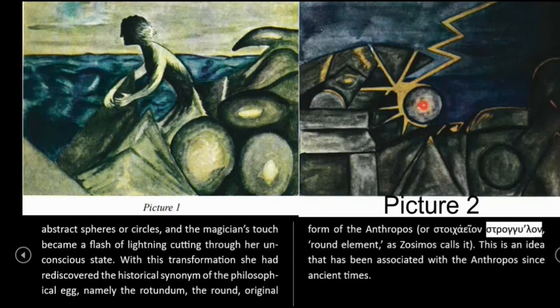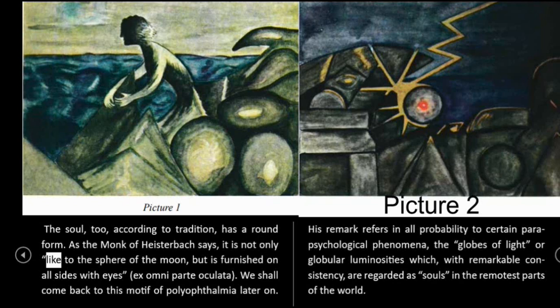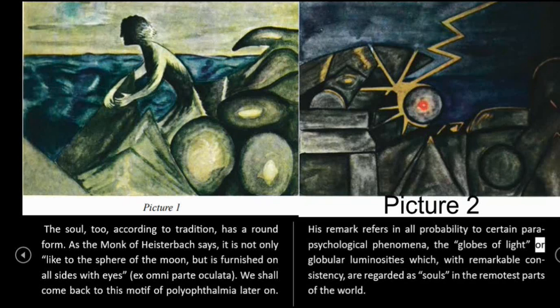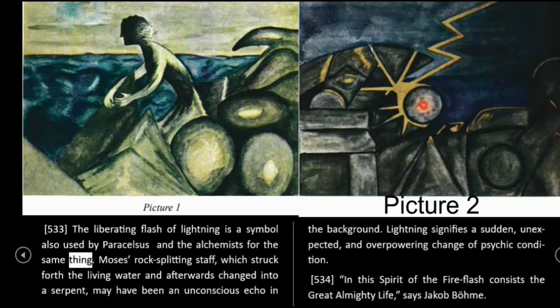This is an idea that has been associated with the anthropos since ancient times. The soul, too, according to tradition, has a round form. As the monk of Heisterbach says, it is not only like the sphere of the moon, but is furnished on all sides with eyes — ex omni parte oculata. This motif of polyophthalmia refers in all probability to certain parapsychological phenomena: the globes of light, or globular luminosities which, with remarkable consistency, are regarded as souls in the remotest parts of the world. 533: The liberating flash of lightning is a symbol also used by Paracelsus and the alchemists for the same thing. Moses' rock-splitting staff, which struck forth the living water and afterwards changed into a serpent, may have been an unconscious echo in the background. Lightning signifies a sudden, unexpected, and overpowering change of psychic condition.